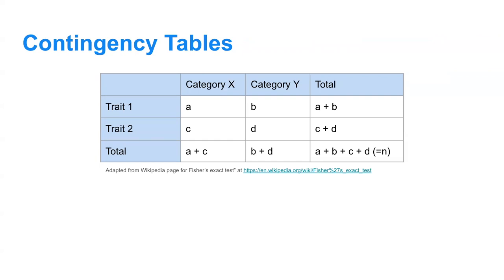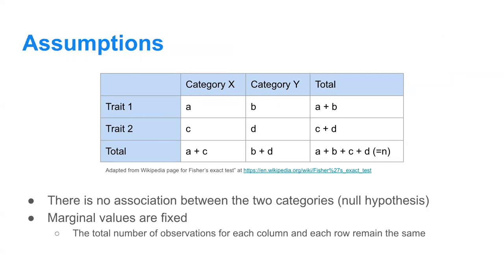Fisher's exact test is built on the idea of contingency tables. This is an example of a two-category contingency table. You have two different things you're looking at: category X versus category Y, and also trait one and trait two. You want to see what the association is between both of these traits and these categories. The null hypothesis would be that there is no association between the two categories, and this is one of the assumptions in order to run Fisher's exact test. The second assumption is that the marginal values are fixed — the total values in the columns and rows remain the same for all the different possibilities you will build from this table.